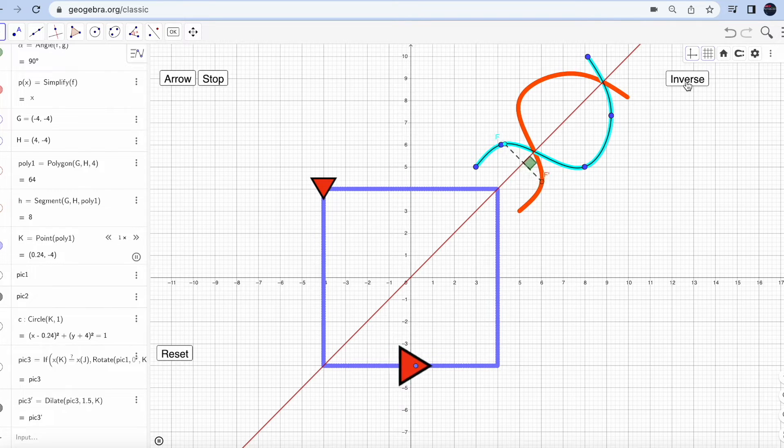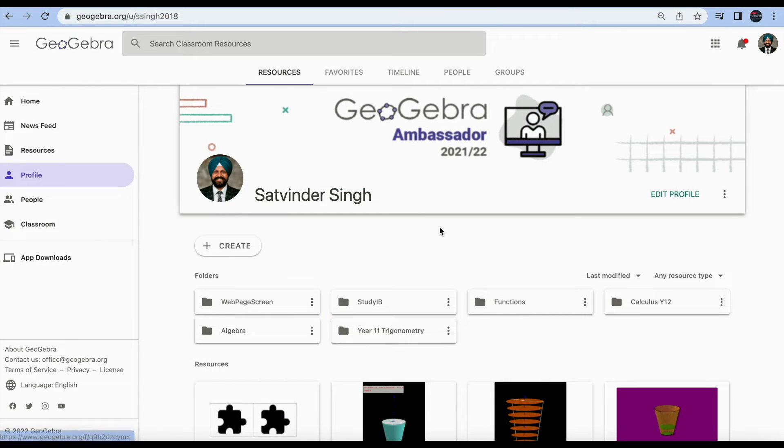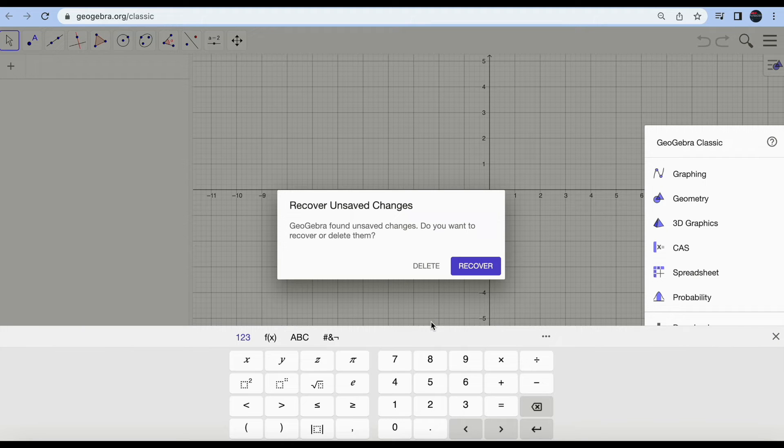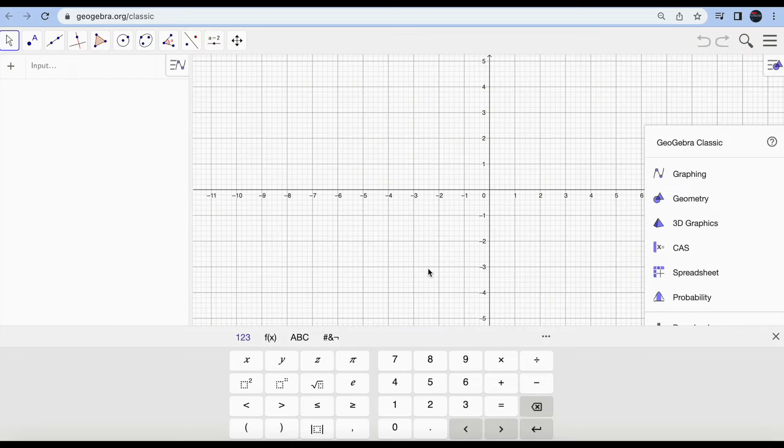Here I am on GeoGebra.org. You can see my profile, and if I go to app downloads and hit GeoGebra Classic 6, that's the first thing you should do.